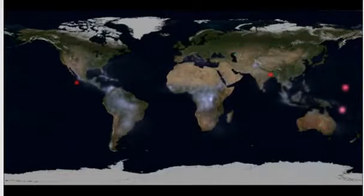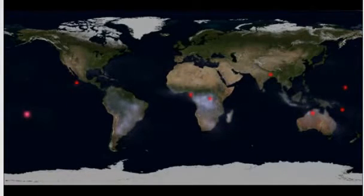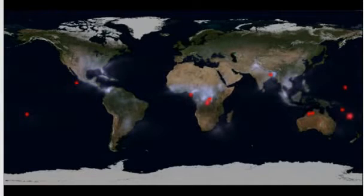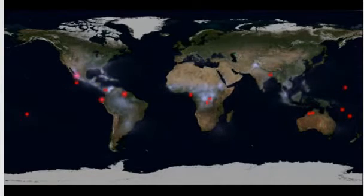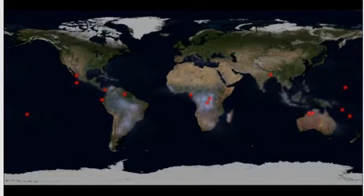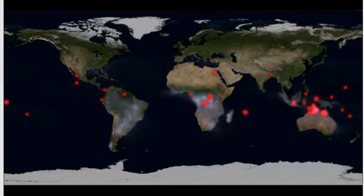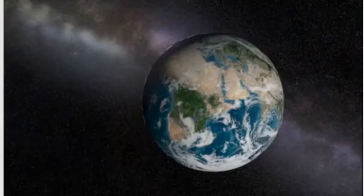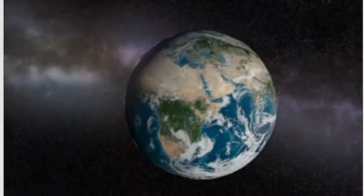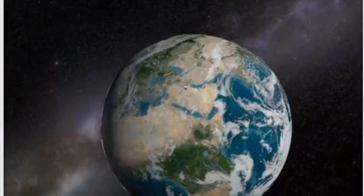The process starts with a terrestrial gamma ray flash, or TGF, an intense pulse of gamma rays originating from thunderstorms. These dots mark TGFs observed by Fermi's gamma ray burst monitor during the spacecraft's first eight months of operations. Researchers estimate that there may be as many as 500 TGFs each day.